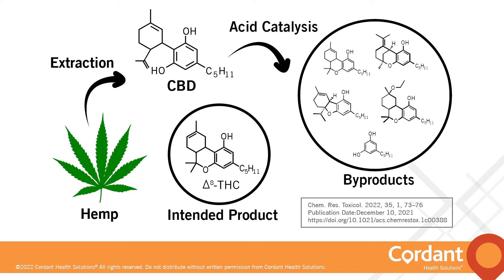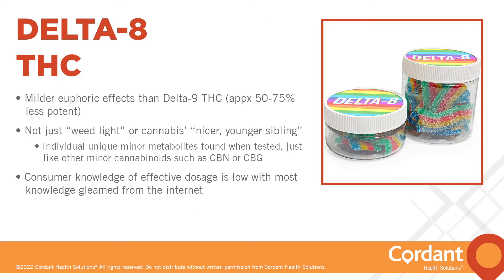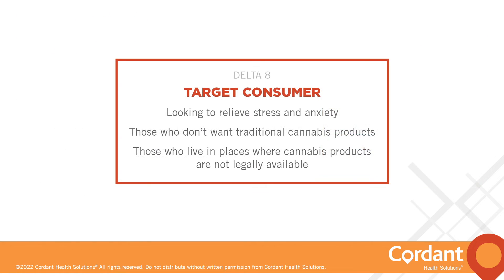Delta-8 is largely unregulated and is often found in gas stations, head shops, and online — usually sold outside of authorized marijuana dispensaries and often advertised as legal hemp products. Studies claim a much milder euphoria than delta-9 THC, approximately 50 to 75 percent less potent, so people often call it 'diet weed' or 'weed light.' However, it's not just cannabis's nicer younger sibling — there are individual unique minor metabolites found when tested. Consumer knowledge of effect and dosage is low, with most knowledge gleaned from the internet. Target consumers are those looking to relieve stress and anxiety, those who don't want traditional cannabis products, and those who live where cannabis is not legally available.